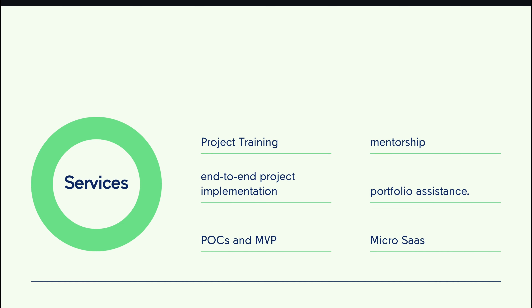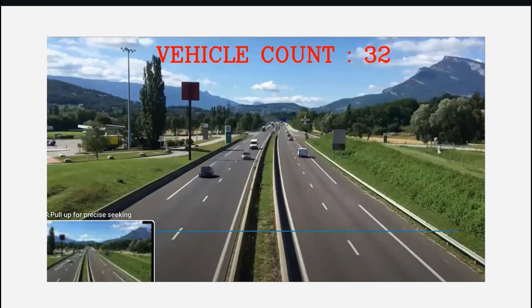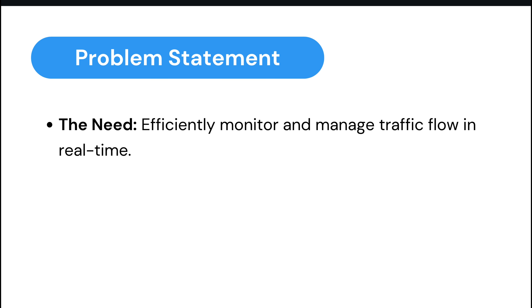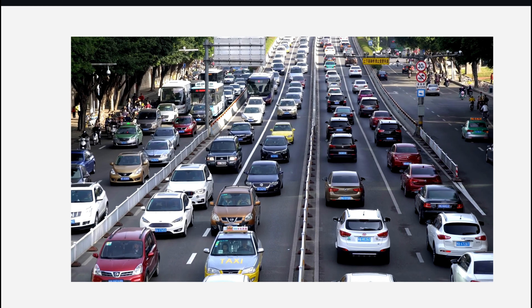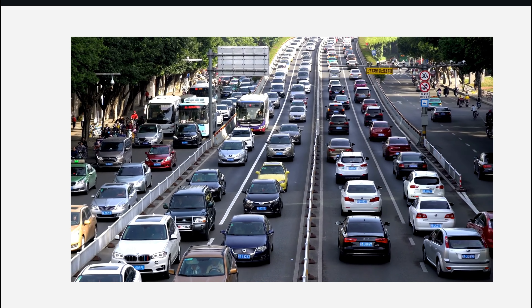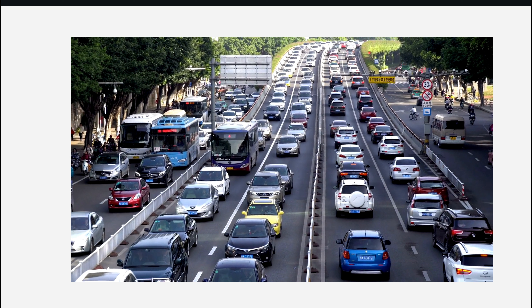Let's jump right into the problem statement. This is the demo of the project — this is what it will finally look like, and you can see the vehicle count at the top. You can modify it accordingly. The core objective of this project is to accurately detect and count vehicles in video streaming. The need for this project is to efficiently monitor and manage traffic flow in real time, analyzing traffic patterns, optimizing traffic flow, and implementing effective measures to reduce congestion.